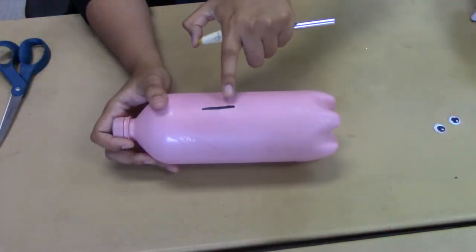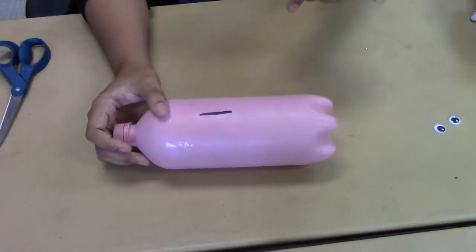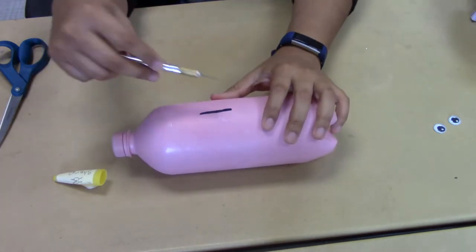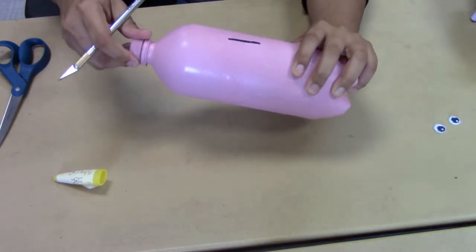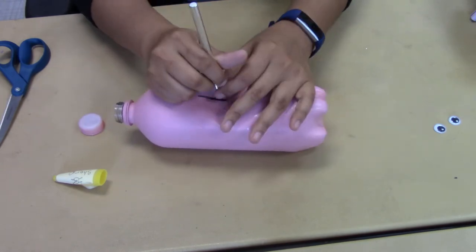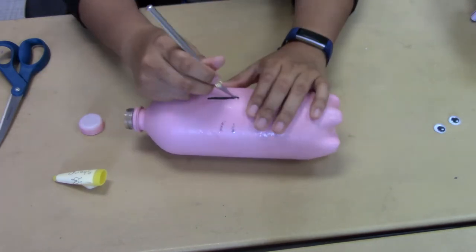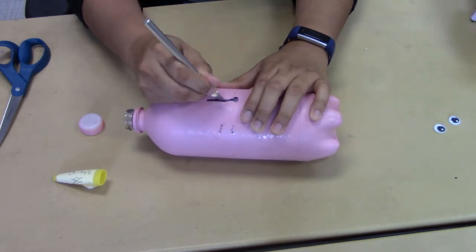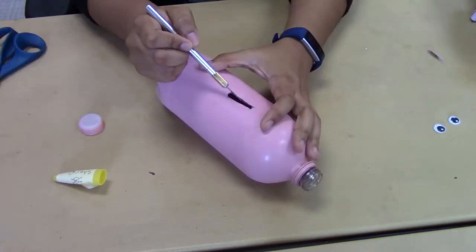So we just drew a little black line there and then you are going to use your exacto knife to cut that out. And that is the slot.